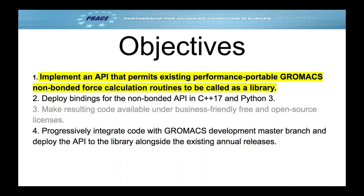The main objective of the NbLib project is to implement an API that permits existing performance-portable GROMACS non-bonded force calculation routines to be called as a library. Related goals include having nice C++ and Python code — we don't currently have Python though we may in the future — and making the code easy to get your hands on. A version of NbLib is actually shipped with GROMACS 2021.